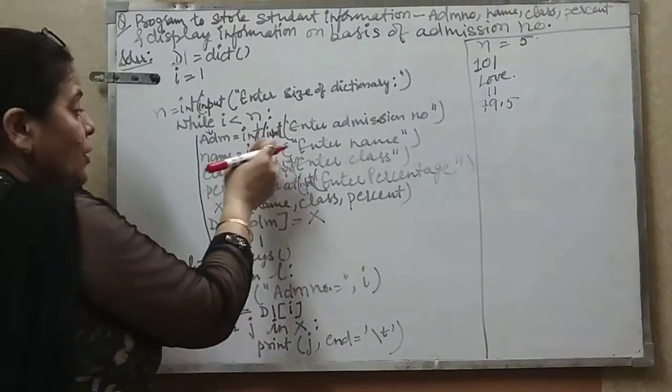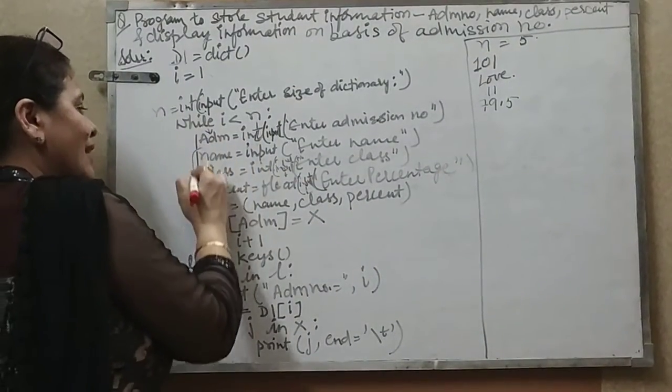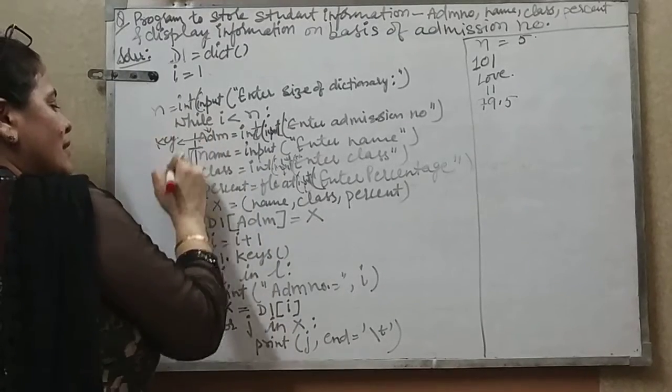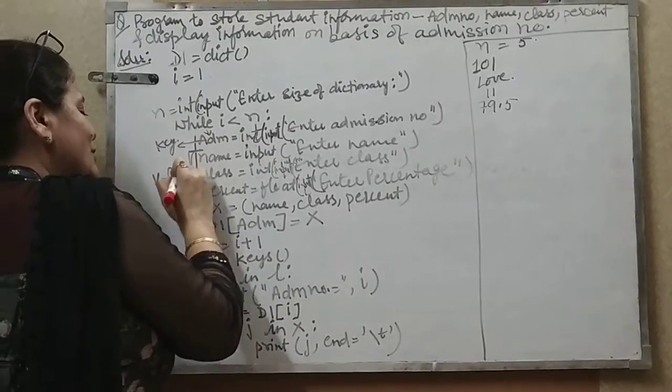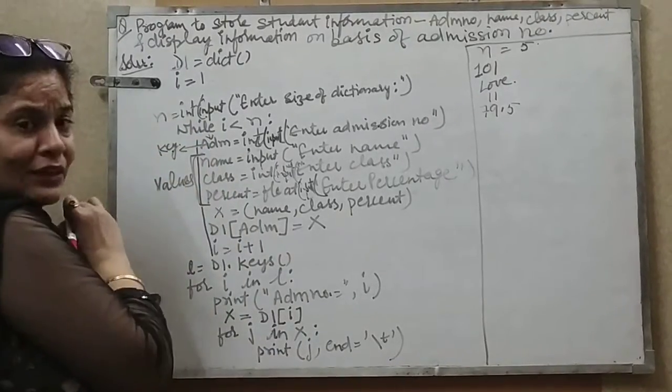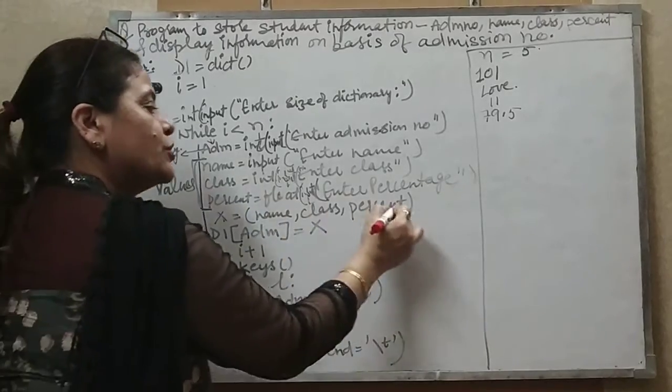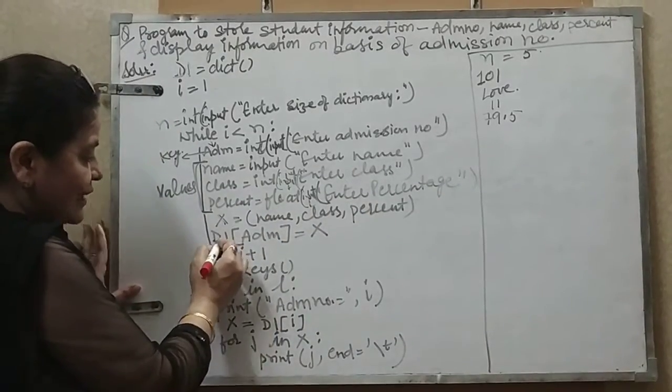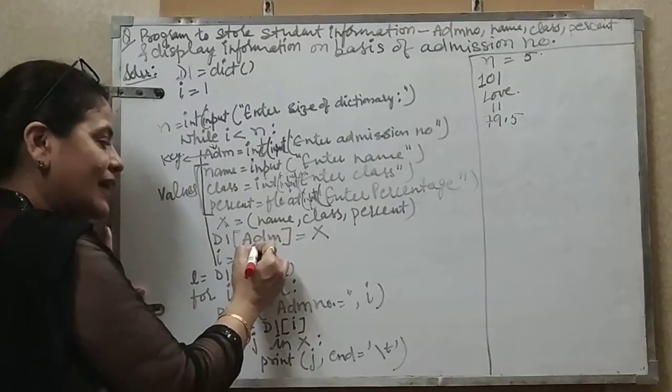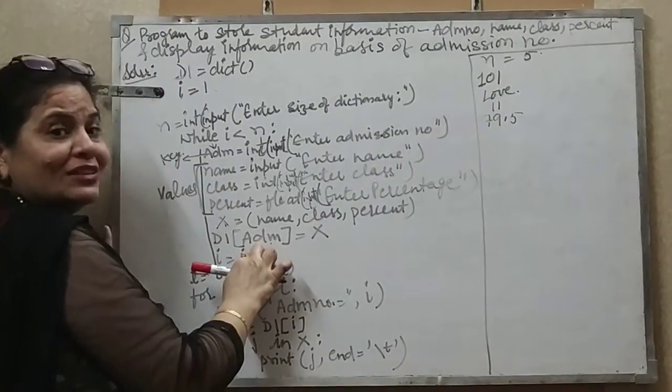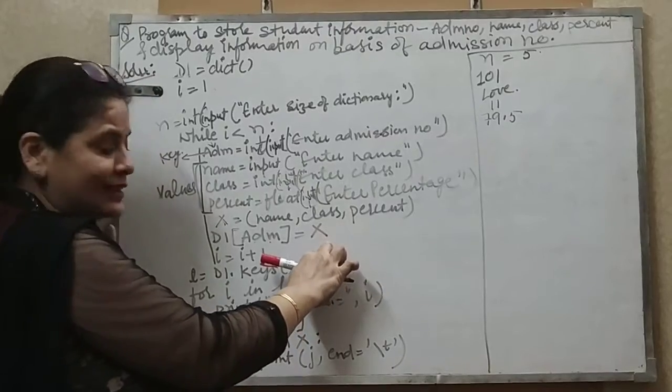x equals, I have taken all three values because these three are my values and this is my key. I am taking it as values. One key contained more than one value in it, so I placed one variable x which contained all three values. We are writing D1 of ADM. If my admission number is 101, admission number 101 will contain all three values in it.